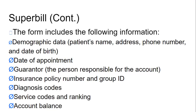The super bill form includes the following information: demographic data — patient's name, address, phone number, and date of birth; date of the appointment; the guarantor, which is the person responsible for the account; the insurance policy number and group ID; diagnosis codes; service codes and ranking; and the account balance.